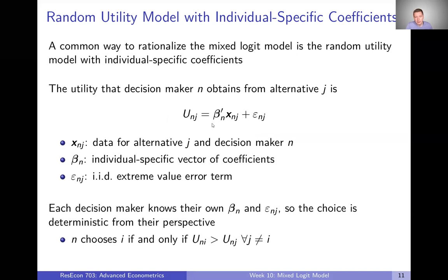The utility is this linear combination of betas and X plus epsilon — this looks exactly like what we've had before, except now our beta coefficients are indexed by N. Every decision maker in our sample or population has their own set of coefficients, not common across the entire population. The X's and epsilons are just like in the logit model: X's are data about the alternatives and the decision makers, and epsilon is once again an IID extreme value error term.